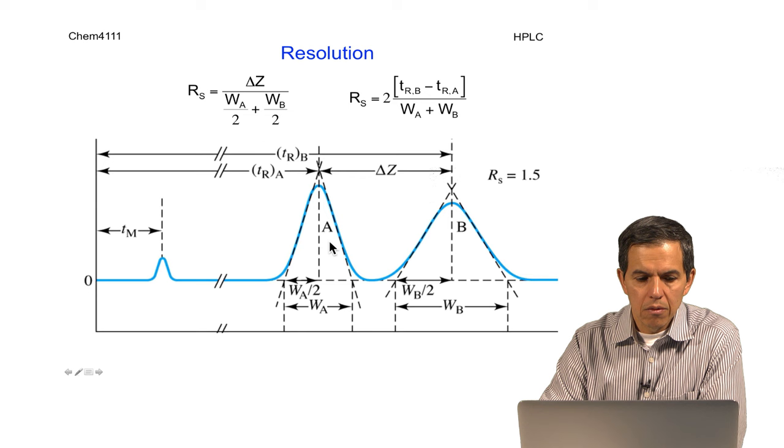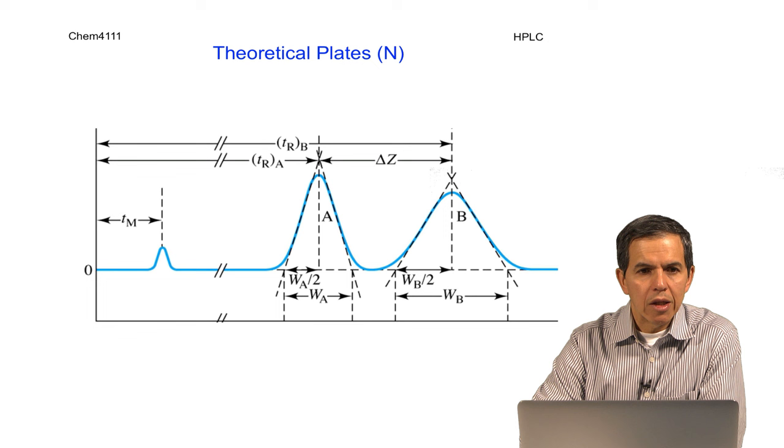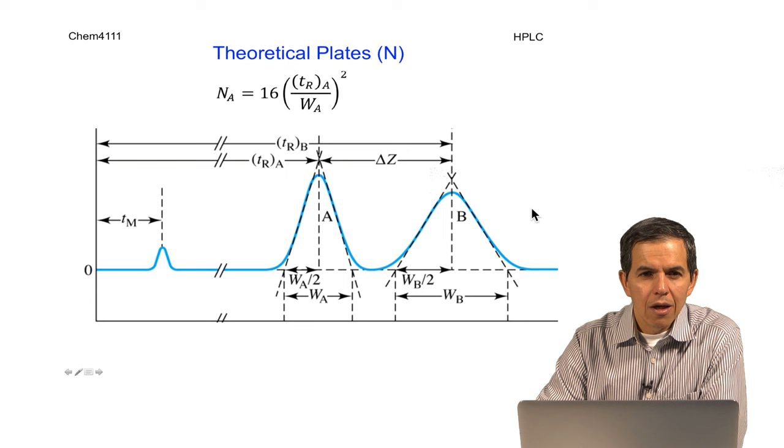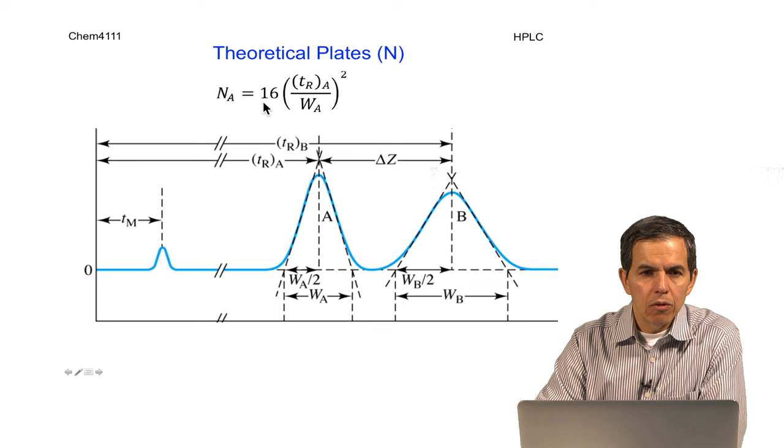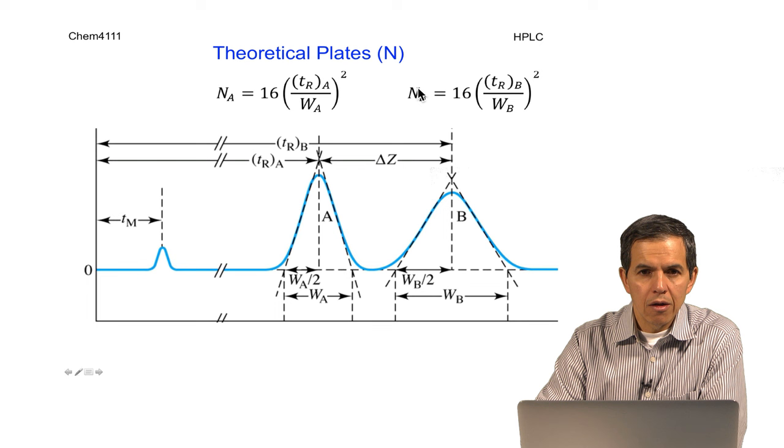A second concept that refers to the quality of the separation is the concept of theoretical plates. Theoretical plates are defined as the retention time of a compound, in this case A, divided by the width of the compound squared, multiplied by a factor of 16. Each compound or zone will have its own theoretical plate number. For instance, B will be exactly the same, with the difference being that it will take into account its retention time and the width of that peak.